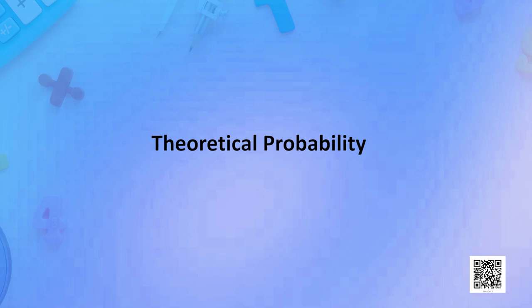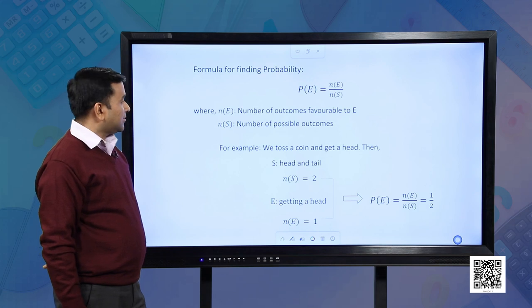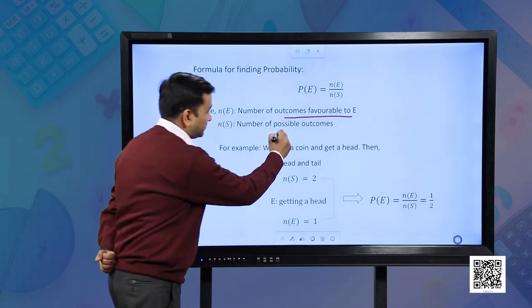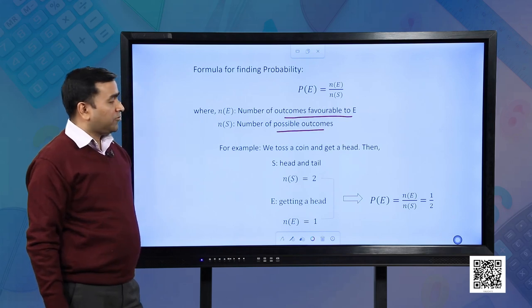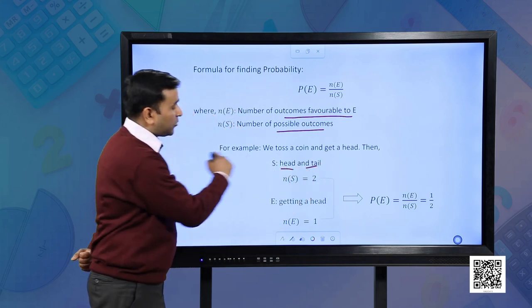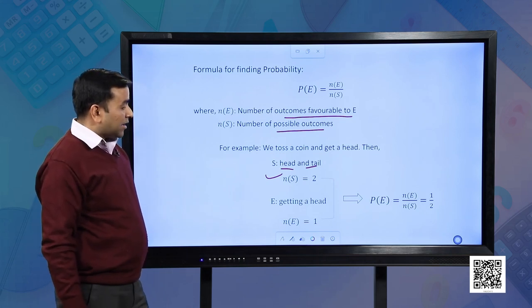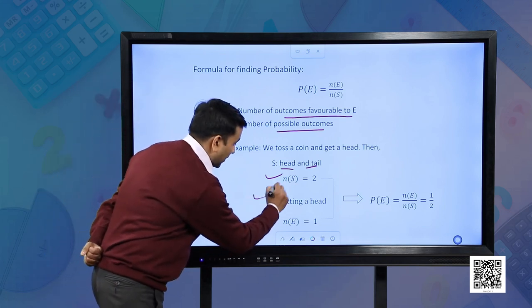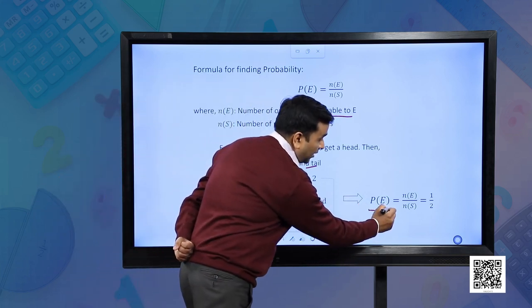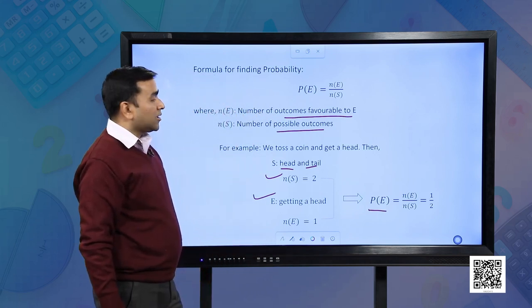Let us find the formula for theoretical probability. It is P(E) equal to N(E) upon N(S), where N(E) is the number of outcomes favorable to E and N(S) is the number of possible outcomes. Let us take an example — we toss a coin. The possible outcomes are head and tail, so the number of possible outcomes is 2. If the event is getting a head, then N(E) becomes 1. Therefore, the probability P(E) equals 1 by 2, that is the number of outcomes favorable to E upon the number of possible outcomes.